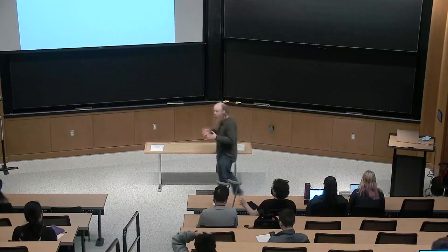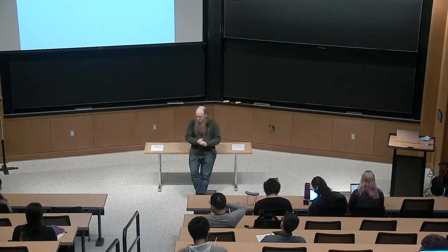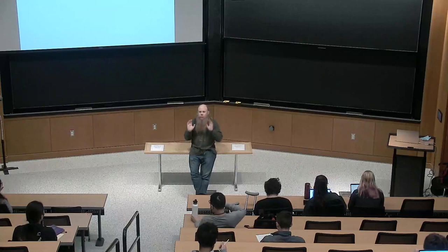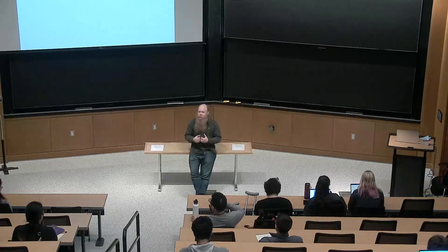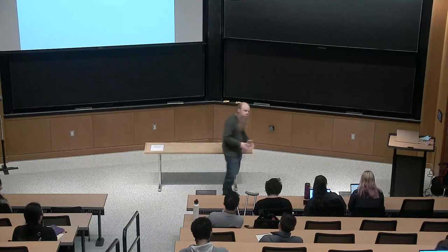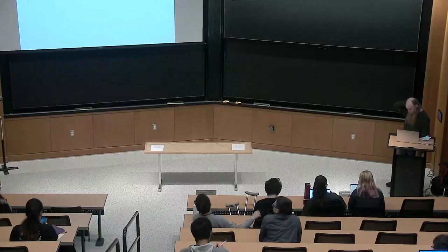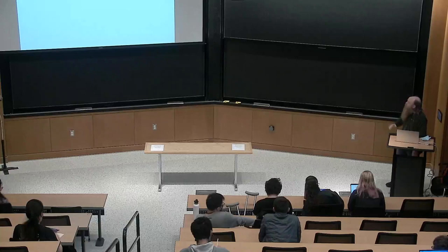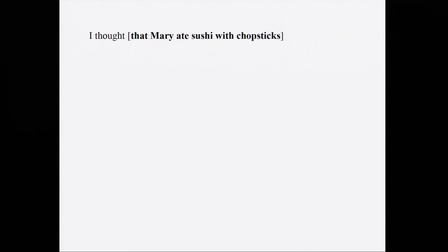One topic we keep coming back to is that although there are many kinds of languages in the world, there are not as many as you could imagine. Languages make choices with respect to how they do syntactic things, but you don't find all logically possible choices. For example, languages either move their WH phrases to the left periphery or leave them in place, but they don't move them to the end or middle of the clause.